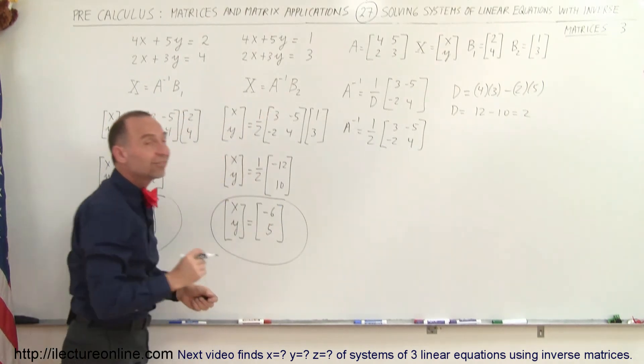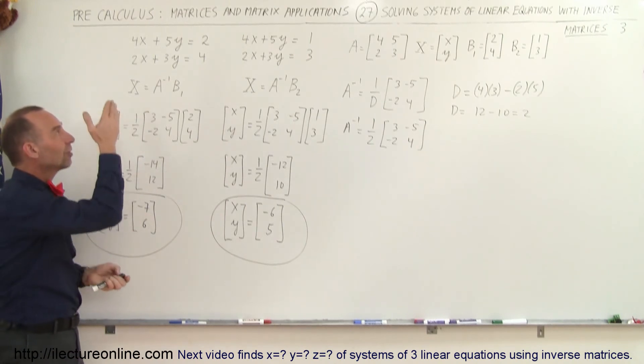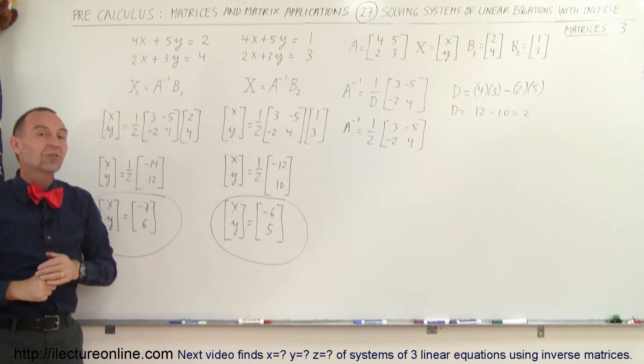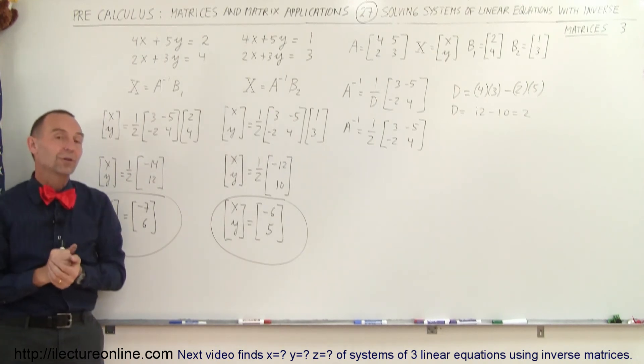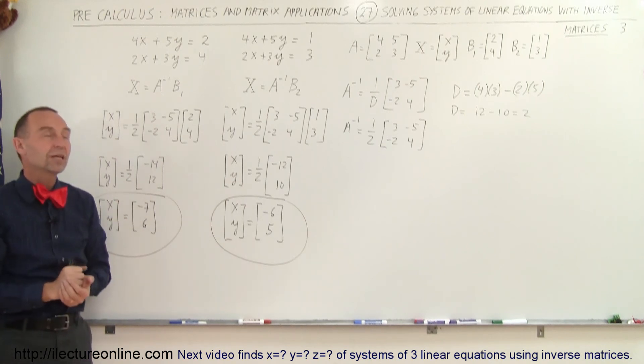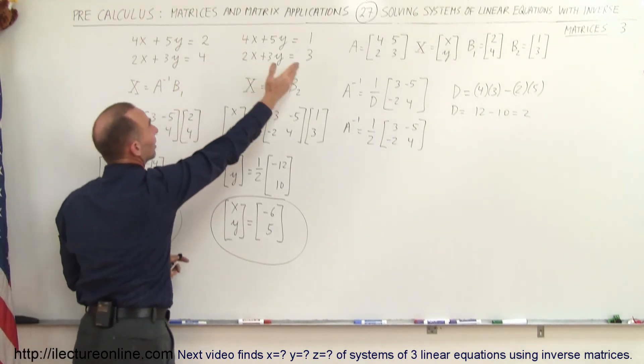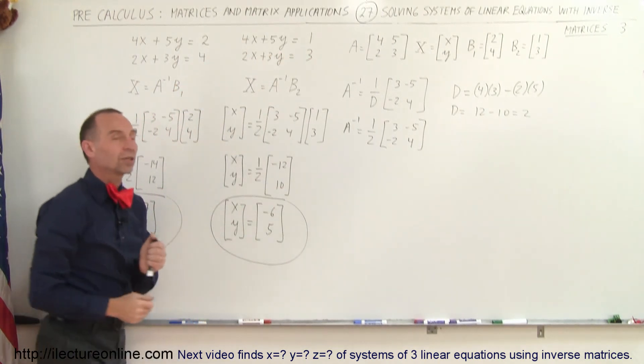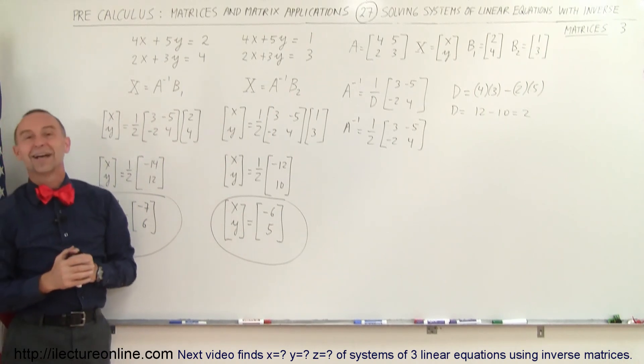So you can see that once you find the inverse of the matrix you can very easily solve for each system quickly by simply multiplying that inverse times the matrix of the constants on the right side of the equal sign. So there's a very nice example of how very efficient this particular methodology can be to solve for systems of linear equations that are similar like this, with the only difference that the numbers on the right side of the equal sign change in each particular case. And that's how it's done.